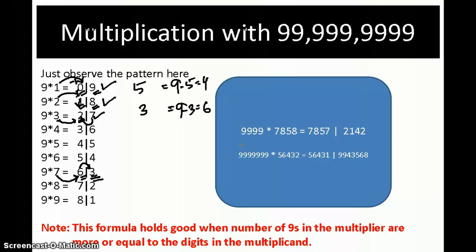Here we have given two examples. You see here, I am doing 9,999 into 7,858. Just think of in a conventional way how much time it will take. But in this way, first thing is 1 less than this number you find, that is 7,8,5,7, and then find 9's complement of this number, that means subtract from 9,999: 9 minus 7 is 2, 9 minus 8 is 1, 9 minus 5 is 4, 9 minus 7 is 2, that's all. So answer is 7,8,5,7,2,1,4,2.